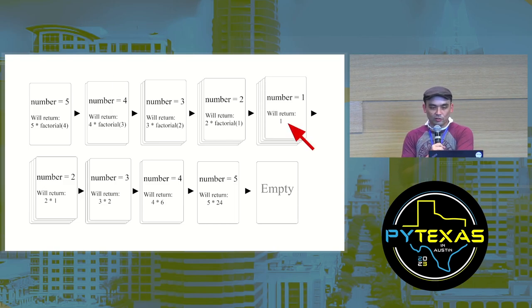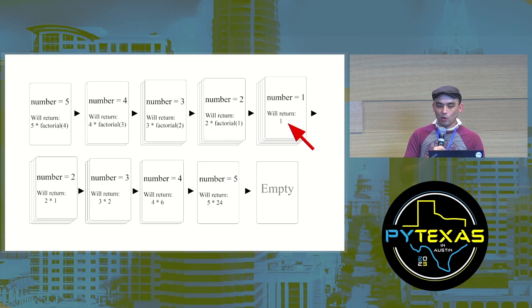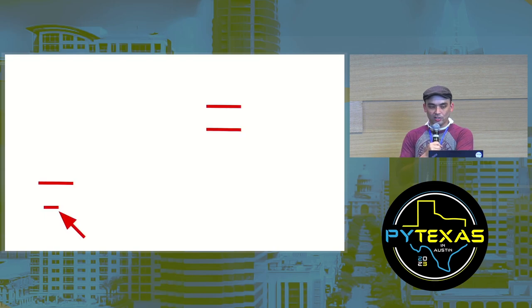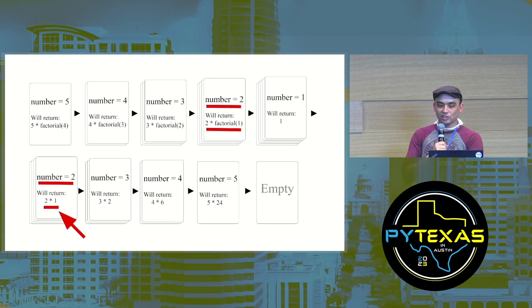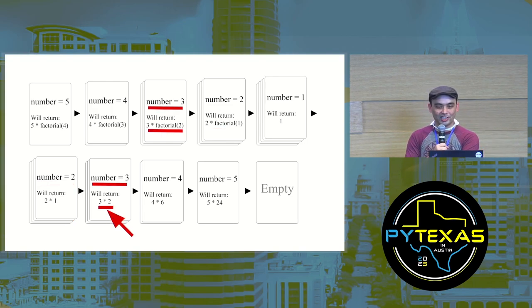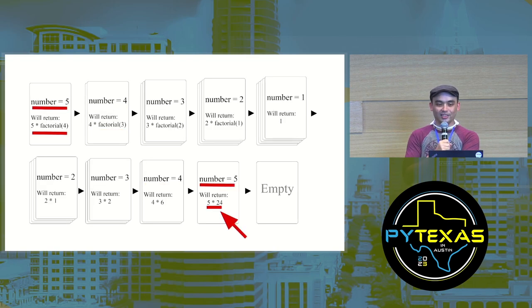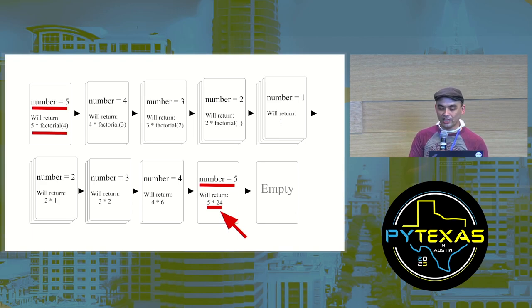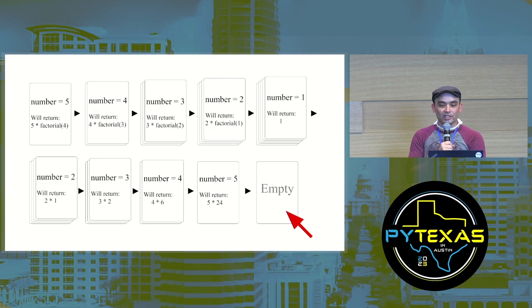We continue pushing frame objects until we reach the base case, which returns one. Then we pop that frame object off the call stack, and the call stack starts getting smaller. We're back to the function call where number was two — now we have all the information to return, so that card gets popped, and so on until the last card returns five times 24, which is 120 — the factorial of five. After that, the call stack is empty and execution is back in the global scope.